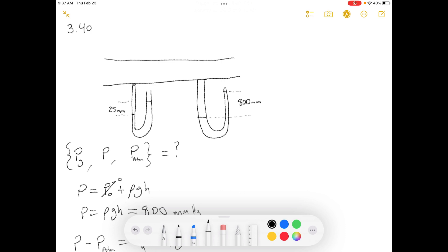The problem statement says two mercury manometers, one open end and the other sealed end, are attached to an air duct. The reading on the open end manometer is 25 millimeters and that on the sealed end manometer is 800 millimeters. Determine the absolute pressure in the duct, the gauge pressure in the duct, and the atmospheric pressure, all in millimeters of mercury.